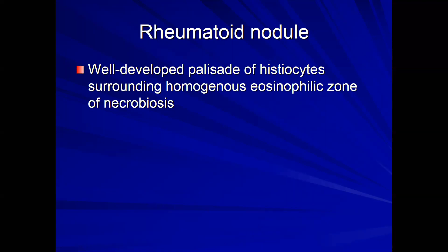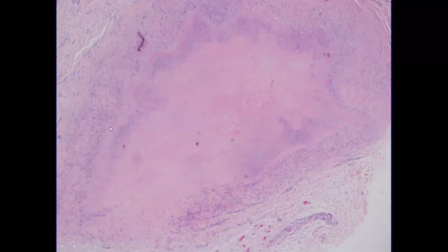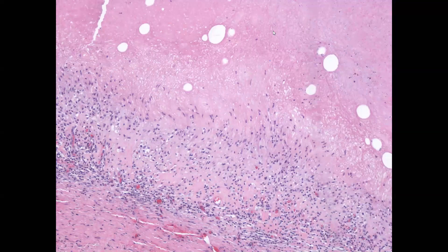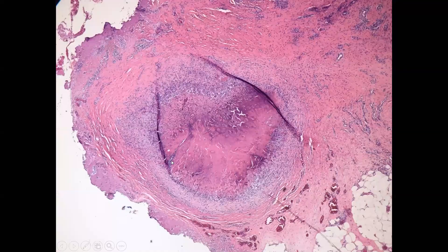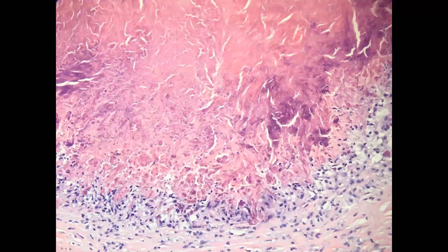Round versus horizontal is not a strict criterion. A rheumatoid nodule, on the other hand, is like a caricature of a palisade — very well developed. If granuloma annulare is an abstract painting of a palisade, a rheumatoid nodule is a cartoon: a perfect palisade of histiocytes around a very, very homogeneous pink zone of necrobiosis. Here is a rheumatoid nodule with the palisade of histiocytes and homogeneous pink material — and it should remind you of the lupus miliaris case.